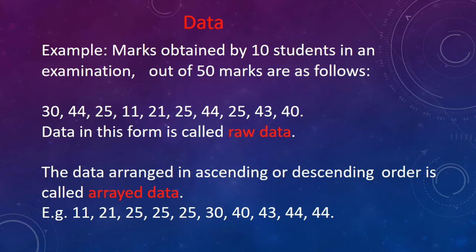When the data is arranged in ascending or descending order, it is called arrayed data. It will be easy to collect information from the arrayed data than the raw data. Here, the arrayed data is arranged in ascending order. We can see now it is easy to find out the maximum mark or how many students received the maximum mark, etc.